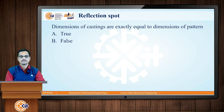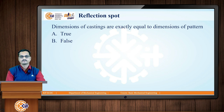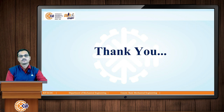I would like to ask a question based on these discussions. The question is on the screen — you have to say true or false: 'Dimensions of a casting are exactly equal to dimensions of a pattern.' The correct answer is false. Dimensions of a casting are always smaller than the dimensions of a pattern, because shrinkage allowance is given to the pattern.